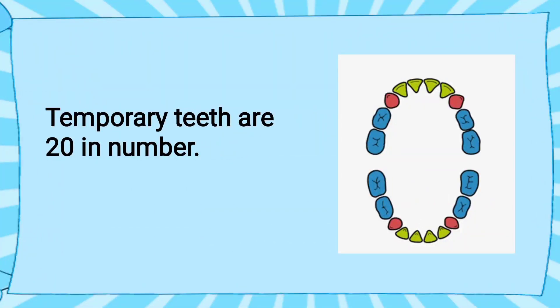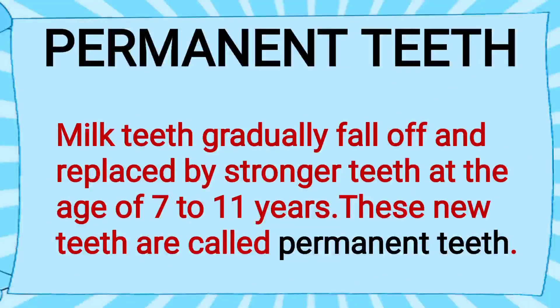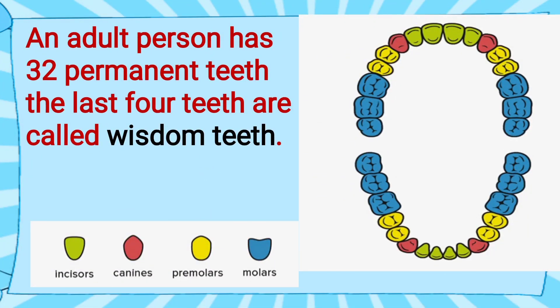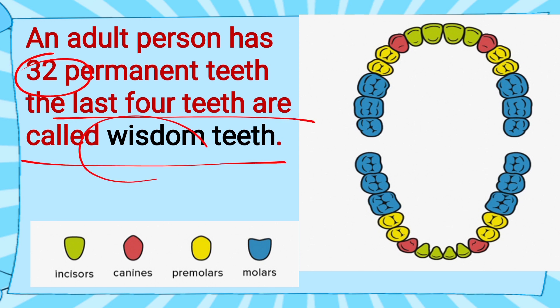The milk teeth, or temporary teeth, are 20 in total. Now let's know about the permanent teeth. After all the milk teeth fall, every milk tooth is replaced by a stronger tooth. At the age of 7 to 11 years — sometimes 12 also — these new teeth which come in the place of milk teeth are known as permanent teeth. An adult person has 32 permanent teeth, and the last 4 teeth are known as wisdom teeth.